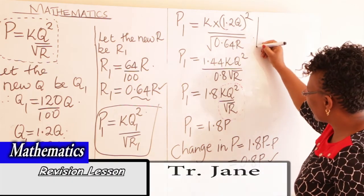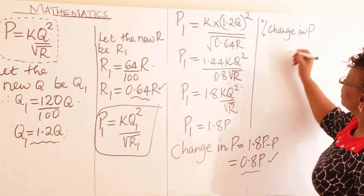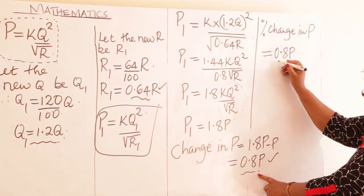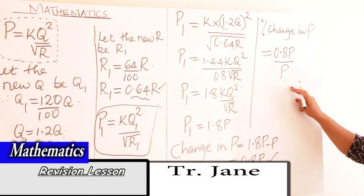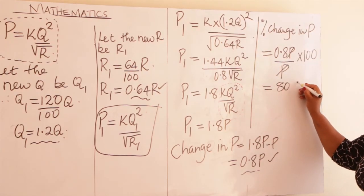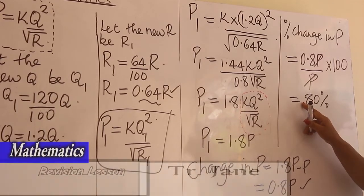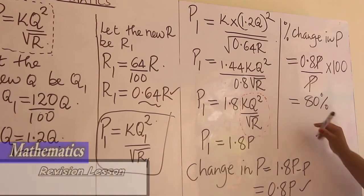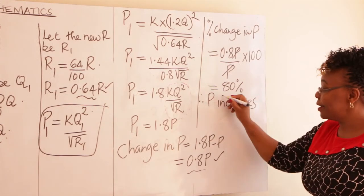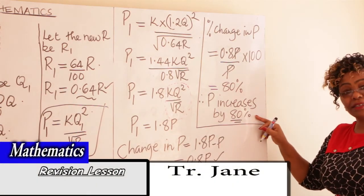The percentage change in P = (change / original P) × 100% = (0.8P / P) × 100% = 80%. Since it is positive, P increases by 80%.